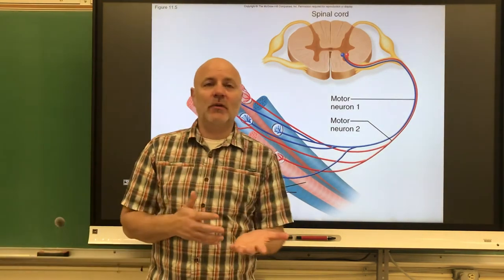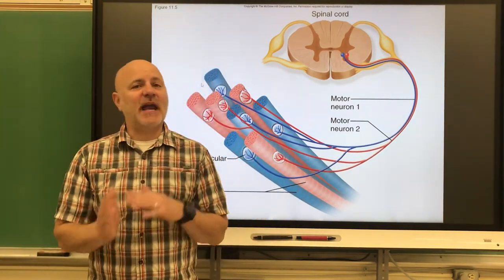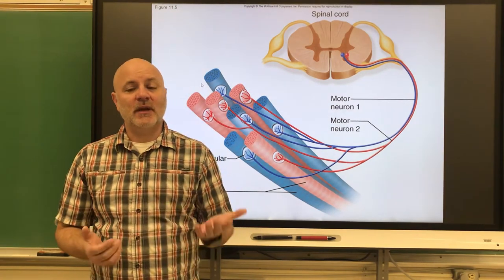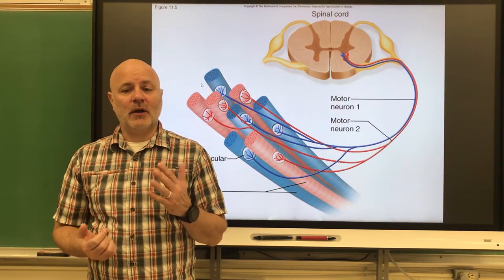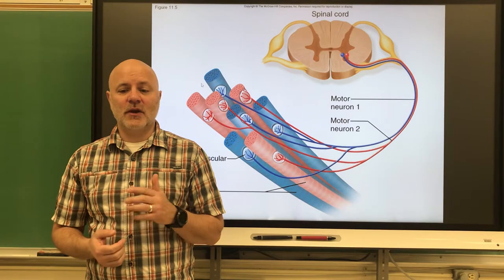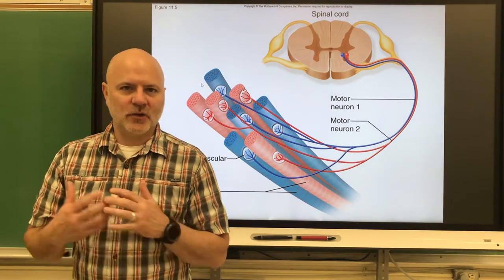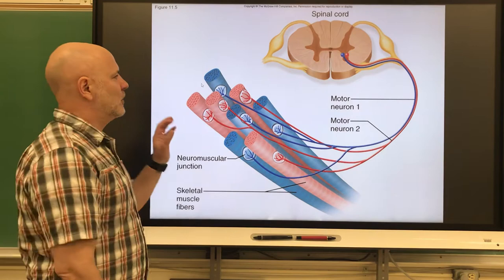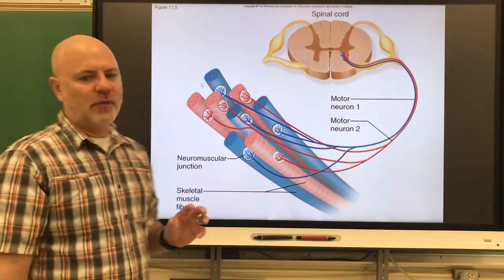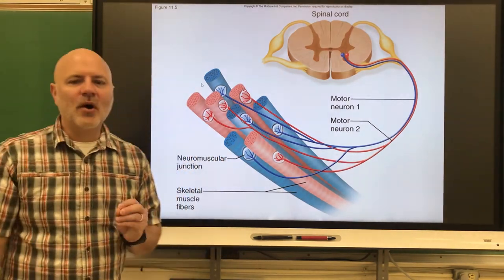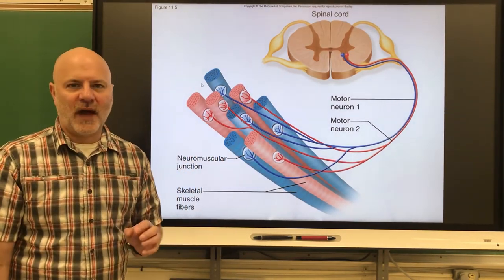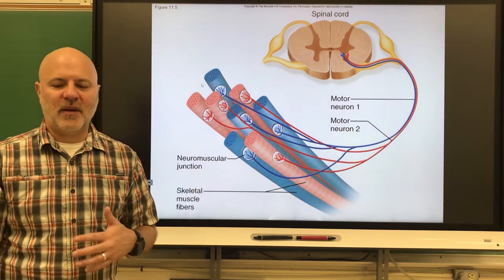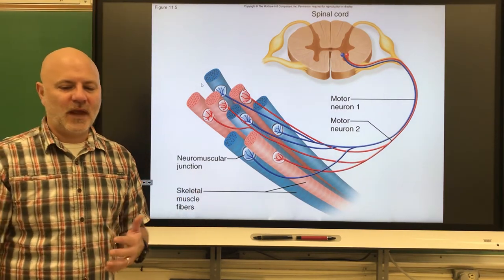I hope you reviewed the action potential or nerve impulse from chapter 11. Now we are going to move on to the nerve-muscle relationship and look at how muscles contract. We'll start with what is known as a motor unit. A motor unit is a nerve fiber, or an axon, and all the muscle fibers innervated by it.